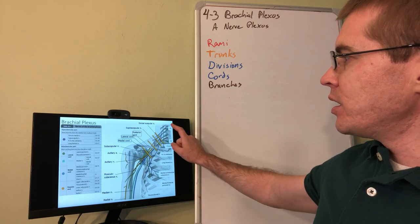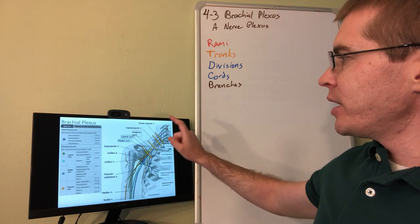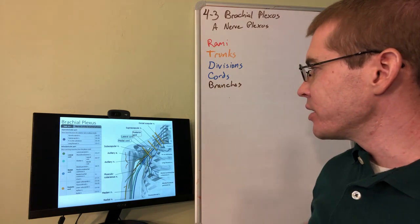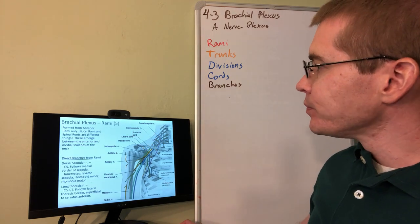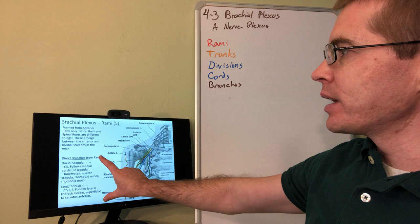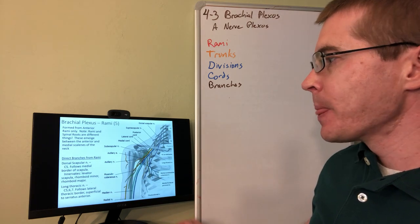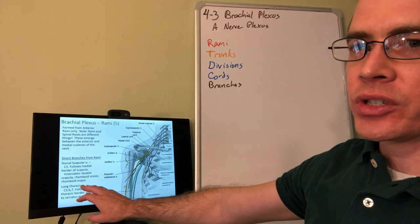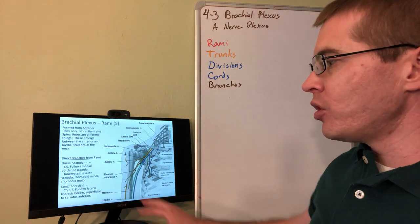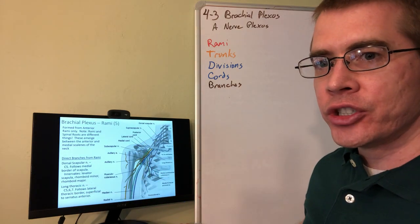So this is the information you're going to have to go through and perform the repetitions on. So here you can see the different rami, trunks, etc. And then I go through and list and describe the individual branches and what their functions are. So this is all critical information you need to know.